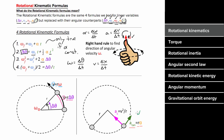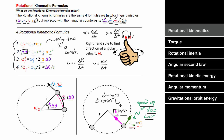Note that this is the tangential acceleration — this acceleration causes the object to speed up or slow down. It's the centripetal component of the acceleration that causes the object to change directions, and the formula for that is still just V squared over R. So if an object is moving in a circle, it must have centripetal acceleration because it's changing directions, but only if it's speeding up or slowing down will it have tangential acceleration and angular acceleration.